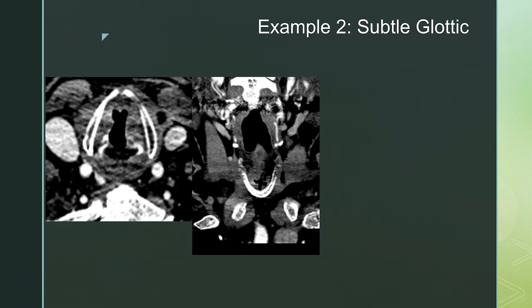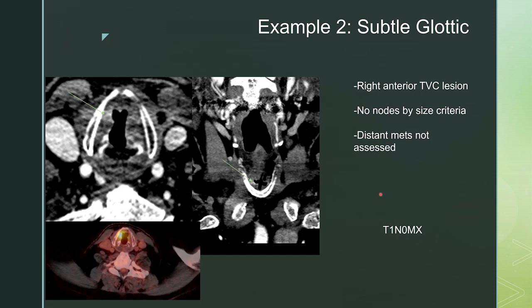For example two, we have a subtle glottic lesion. If you window down, you can see there's a hyperdense appearance of the right anterior cord — the anterior third is hyperdense compared to the left — with a little volume loss of the cord. On the coronal view, you can see the ventricle and the superior surface of the cord with asymmetric hyperdensity compared to the left side. This is a right anterior true vocal cord lesion, no nodes by size criteria, distant mets not assessed — T1N0MX. On the PET scan, you can see it is hypermetabolic.